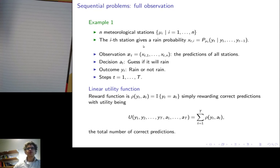Now, we as a decision maker will observe the predictions of all the stations at every point in time t. Then we make a decision a_t. For example, we want to guess whether or not it's going to rain. Afterwards, we see y_t, the outcome. Does it rain or does it not rain? This repeats for capital T steps.